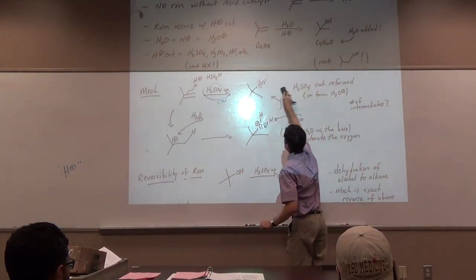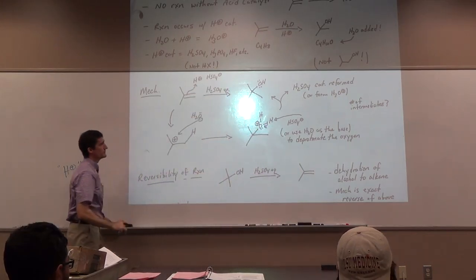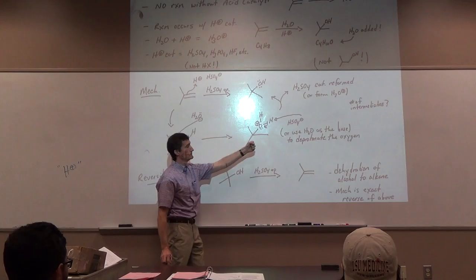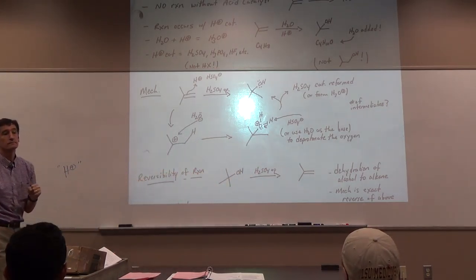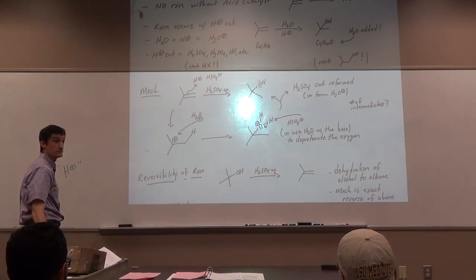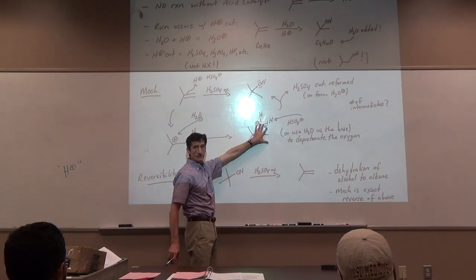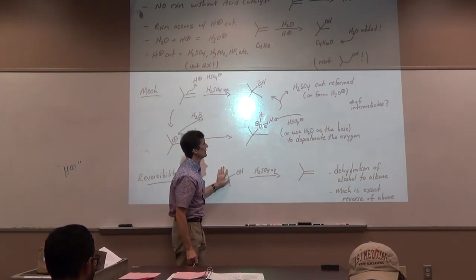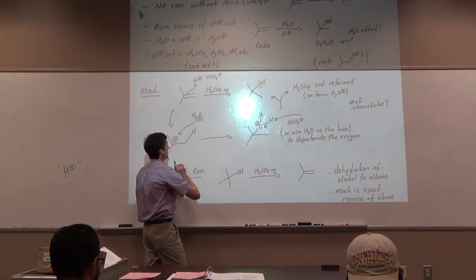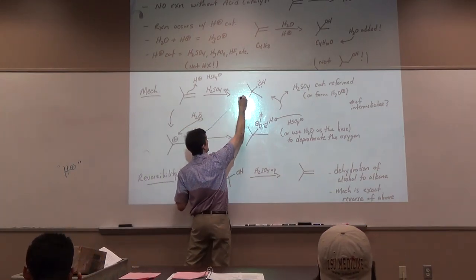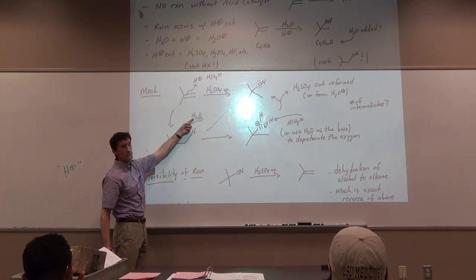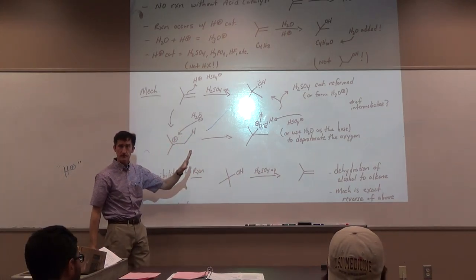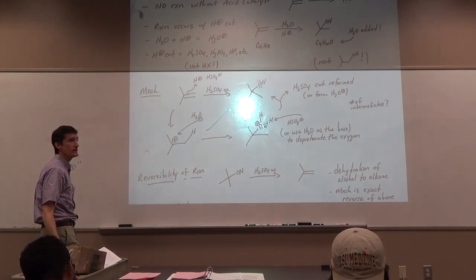How many intermediates are in this reaction? Two intermediates — the carbocation and the oxonium ion. You have to remove the H to get the neutral product. A lot of students just stop at the oxonium and say 'there's my product,' but the oxygen has two H's — what happened to the other H? The mechanism has to show every step and account for everything.